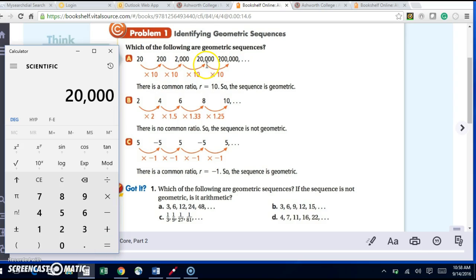Let's multiply by 10 again. Does it give me the next one? Yes, it does. When I multiply by 10 again, does it give me the next one? Yes, it does. So the common ratio is 10.